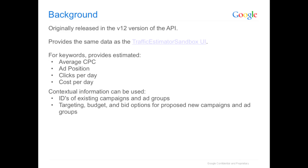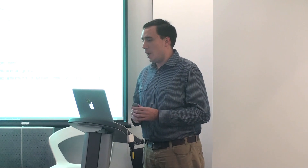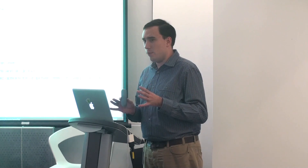It was originally released in v12, so it's been out there for a little while. It basically takes the same functionality as the traffic estimator UI — figuring out for a given keyword, a given bid, and a given targeting, essentially how many clicks you can expect. It differs slightly from the targeting idea service with the keyword tool, which is more about how much traffic is on a keyword and how many searches take place.